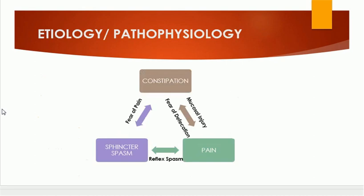In the etiology and pathophysiology of fissure-in-ano, three factors are very important: constipation, pain, and sphincter spasm. These three factors each increase the others. For example, constipation leads to sphincter spasm, and because of the fear of pain, sphincter spasm also leads to constipation. Similarly, constipation leads to mucosal injury, which leads to pain, and pain causes fear of defecation, which increases constipation.